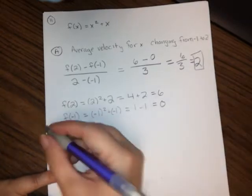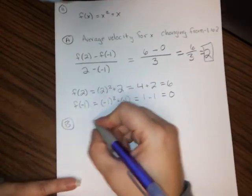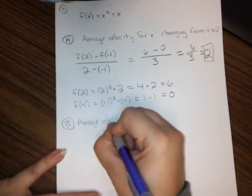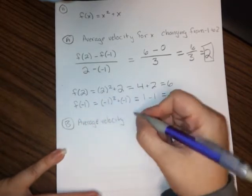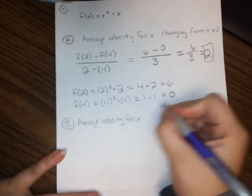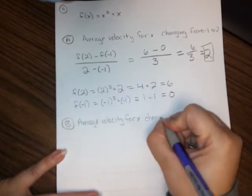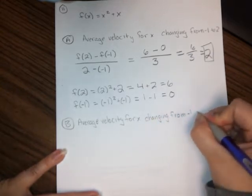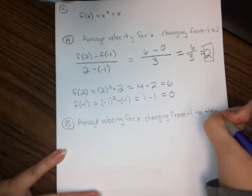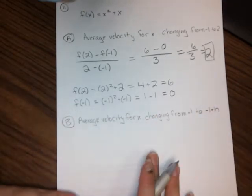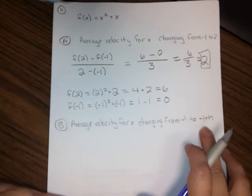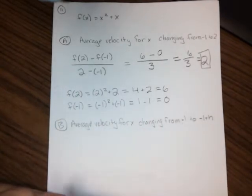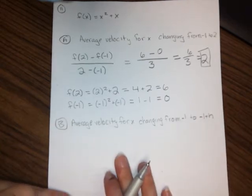And then when everything's simplified, you're going to get the answer. So now what we need is to find the average velocity in part b. They're asking for the average velocity for x changing from negative 1 to negative 1 plus h. So this is the exact same thing, except I'm going to be plugging in negative 1 plus h instead of 2. I already have all of the information I need for negative 1. So what I need to do is this negative 1 plus h.